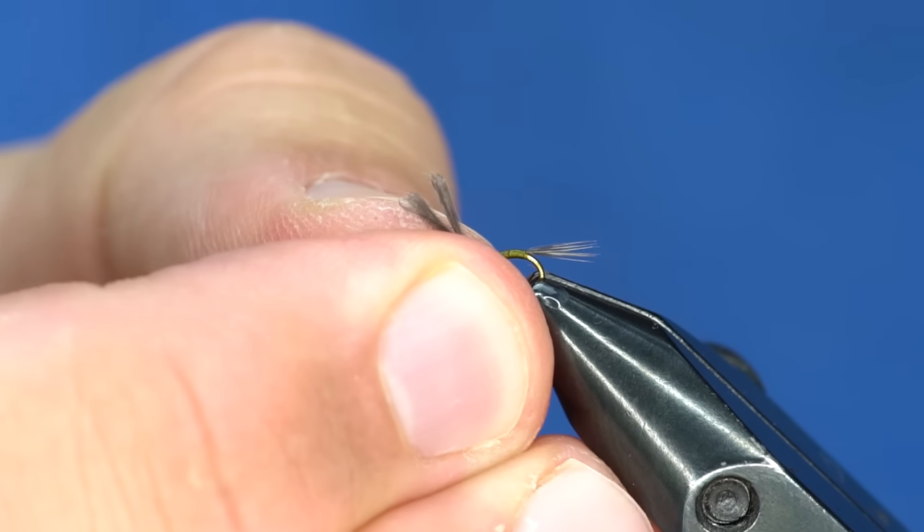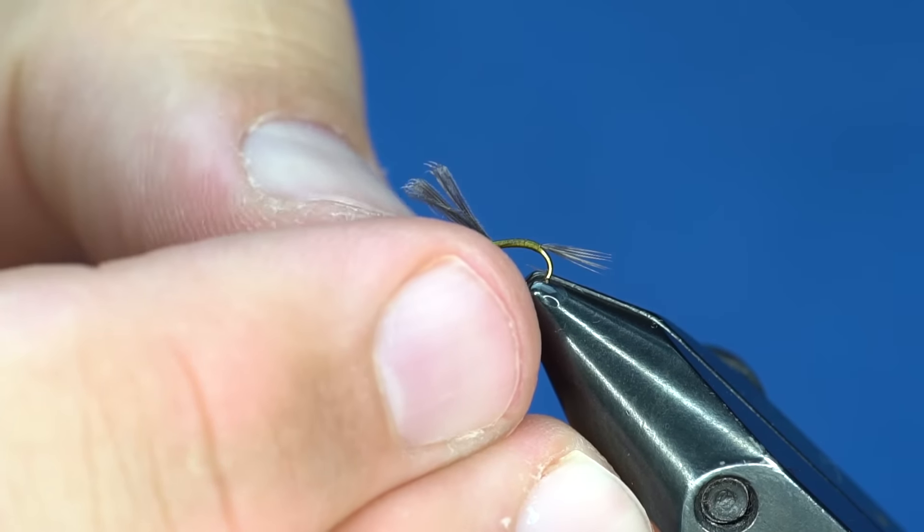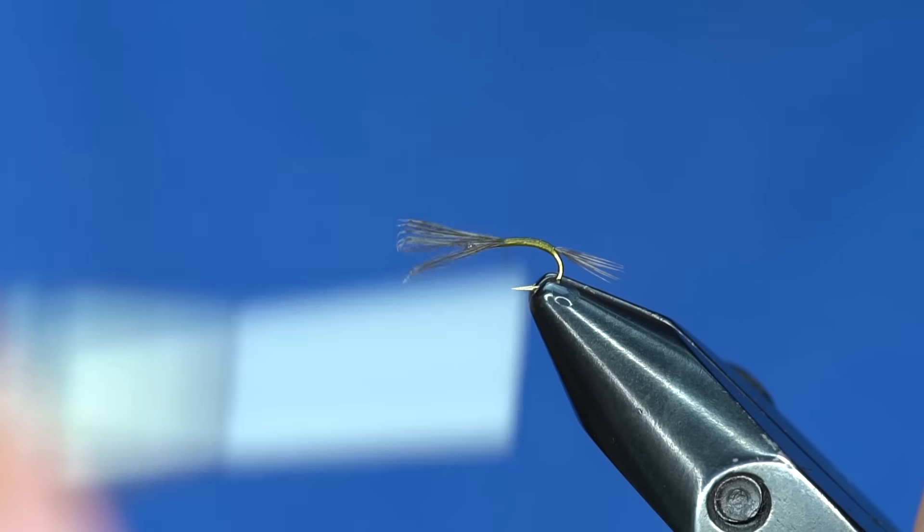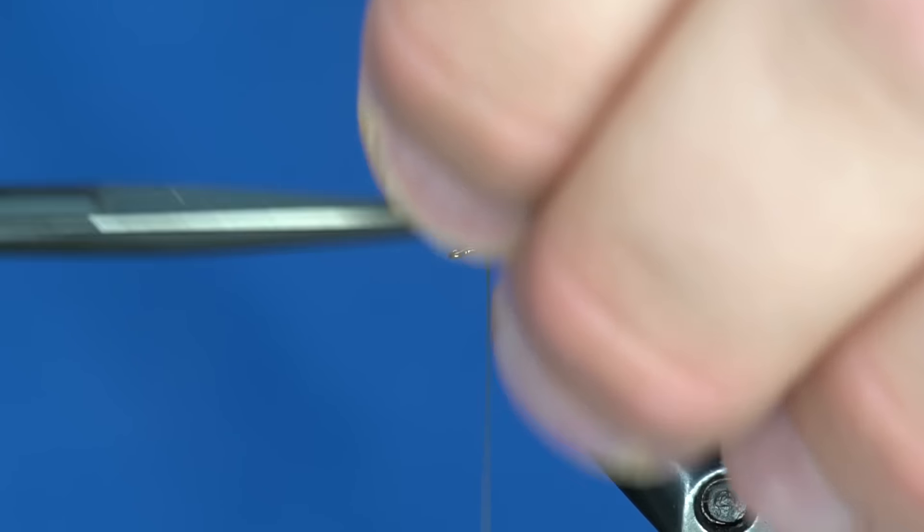I'm just going to wrap that forward to about right there. Now I'm going to come in and adjust my hook back up to a normal position. We'll trim that off.